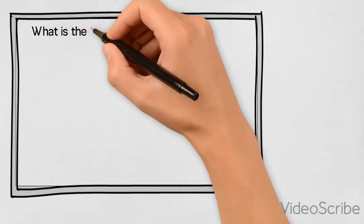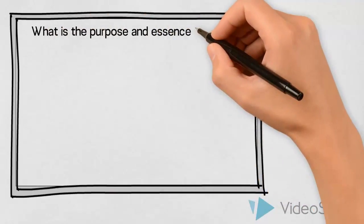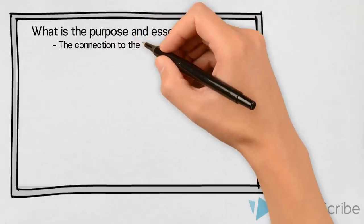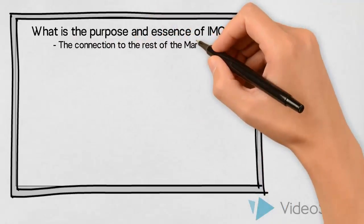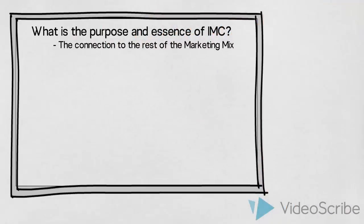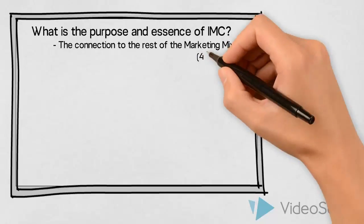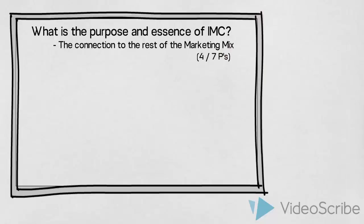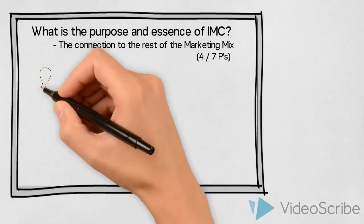What is the purpose and essence of an integrated marketing campaign, and what is the connection to the rest of the marketing mix? When you are asked to design the marketing mix, you need to make decisions on four or seven core elements, also known as the four or the seven P's.